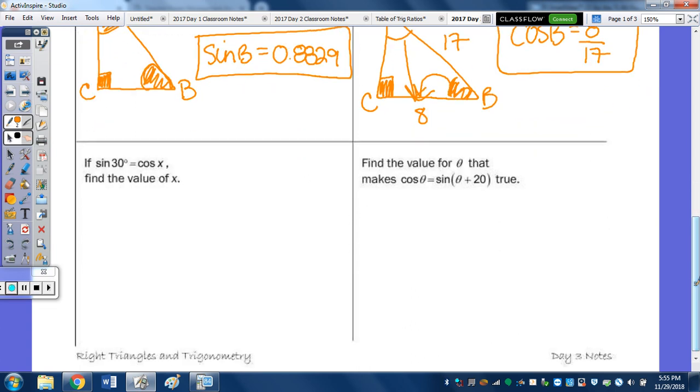If the sine of 30 is equal to the cosine of X, find the value of X. Whenever you have the sine of an angle equal to the cosine of another angle, the two angles are complementary. So we know that 30 plus X is equal to 90 degrees. Subtract the 30 and X equals 60.